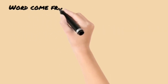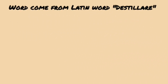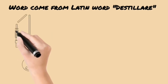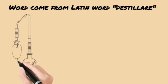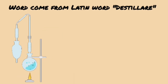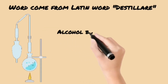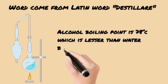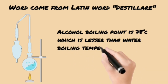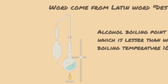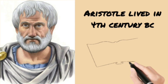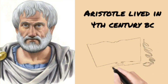The word 'distillation' comes from the Latin word 'destila.' It is a process of heating fermented liquid to convert it into a high-proof alcoholic liquid. High-level alcohol kills yeast and stops fermentation. Alcohol's boiling point is 78 degrees Celsius, which is lower than water's boiling point of 100 degrees Celsius. Greek philosopher Aristotle, who lived in the 4th century BC, wrote about distillation in his book.